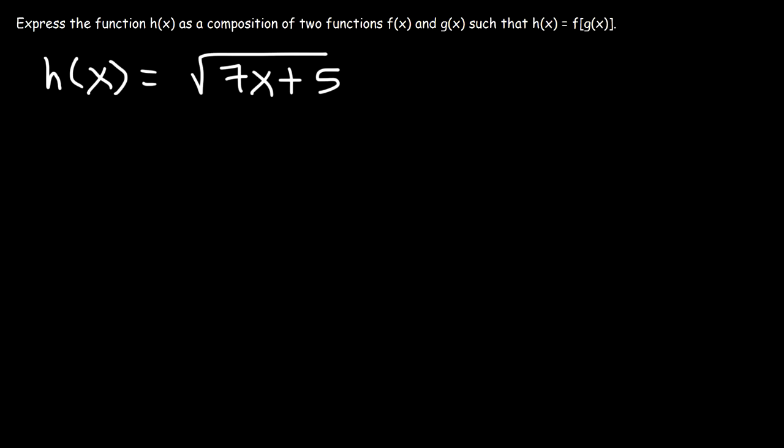let's say that h of x is equal to the square root of 7x plus 5. Express the function h of x as a composition of two functions, f of x and g of x, such that h of x is f of g of x.